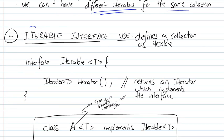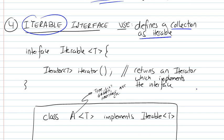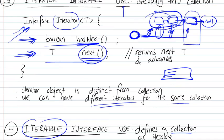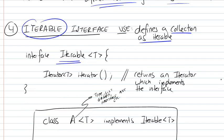Iterable is basically just an interface that allows us to define a collection as iterable — a collection that we can step through. So if you want to define an abstract data type like a list or a binary search tree, you're going to have to implement iterable if you want to step through the elements and be able to return an iterator for that list — something that will plug on to your collection and be able to step through it.